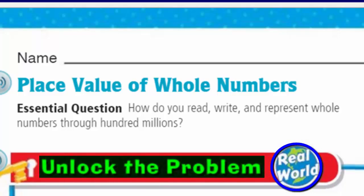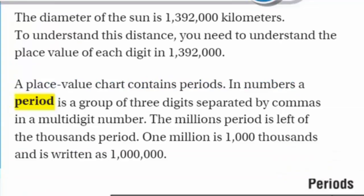That's right, my friends! It's real world, baby! Real world! Okay, so here we go. It says the diameter of the sun is 1,392,000 kilometers. To understand this distance, you need to understand the place value of each digit in 1,392,000. Now it says a place value chart contains periods. In numbers, a period is a group of three digits separated by commas in a multi-digit number.